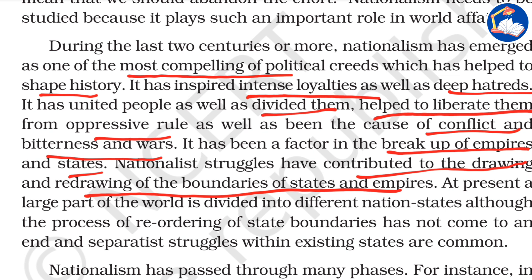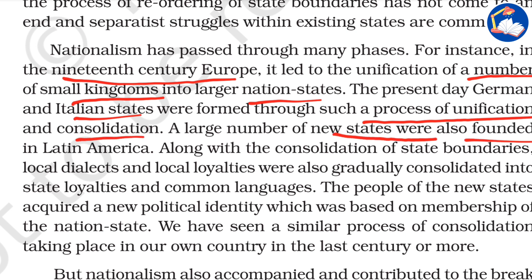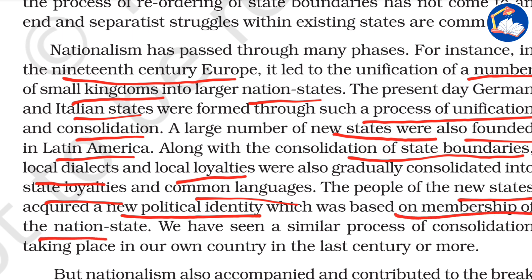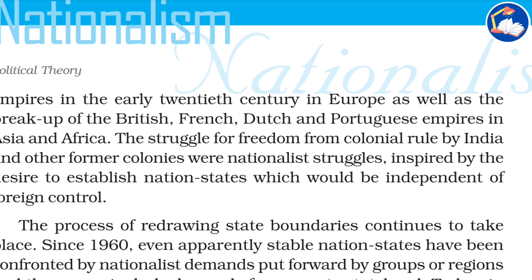Nationalism has passed through many phases. In 19th-century Europe, it led to the unification of a number of small kingdoms into larger nation states — the present-day German and Italian states were formed through such a process. A large number of new states were also founded in Latin America. Along with the consolidation of state boundaries, local dialects and local loyalties were gradually consolidated into state loyalties and common languages. The people of the new states acquired a new political identity based on membership of the nation state.